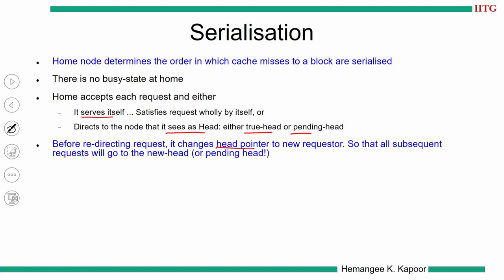Even if the new requester has not yet become the head, the home already points to the new requester as the head node — it says you are the head, eventually connect to the distributed linked list, but I will point to you. The head immediately points to the new requester so that all subsequent requests go to this new requester, allowing us to construct the distributed linked list either as a true list or a pending list.